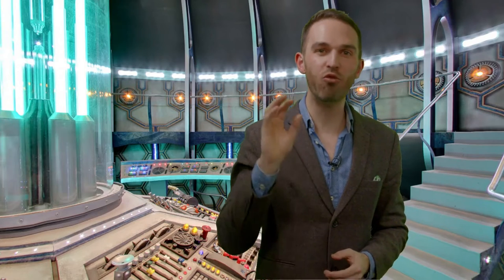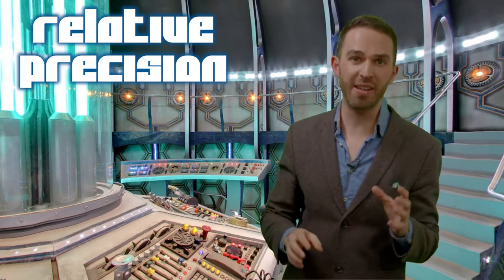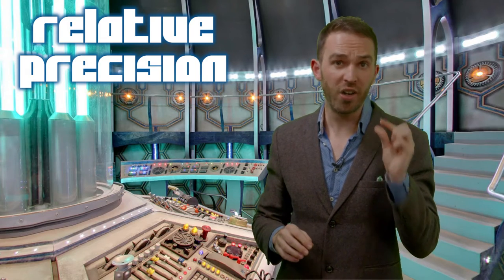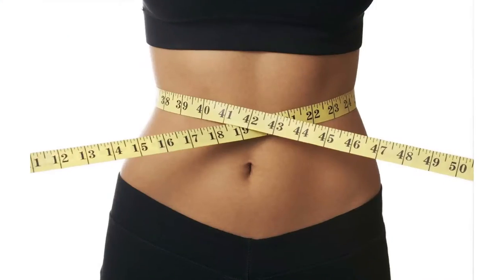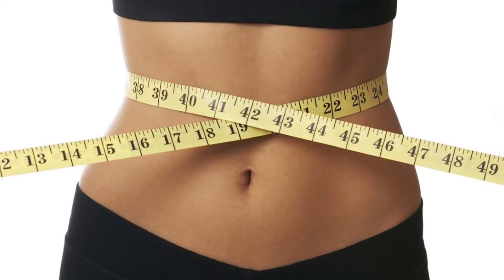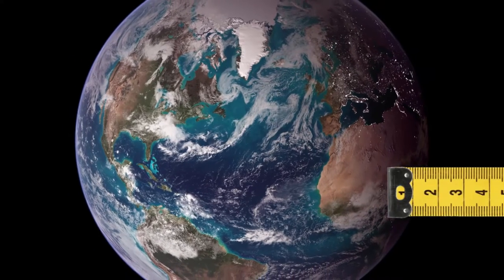What we care about here is the relative precision, which compares the smallest thing you can measure on an instrument with the largest thing it can cope with. Because whilst you might measure your waist with a tape measure, you certainly wouldn't measure the length of the equator with one.